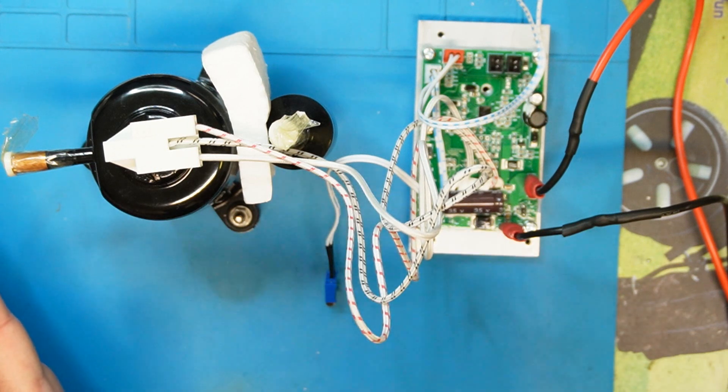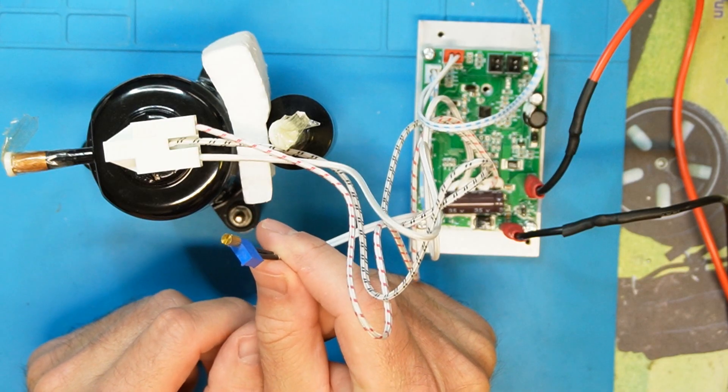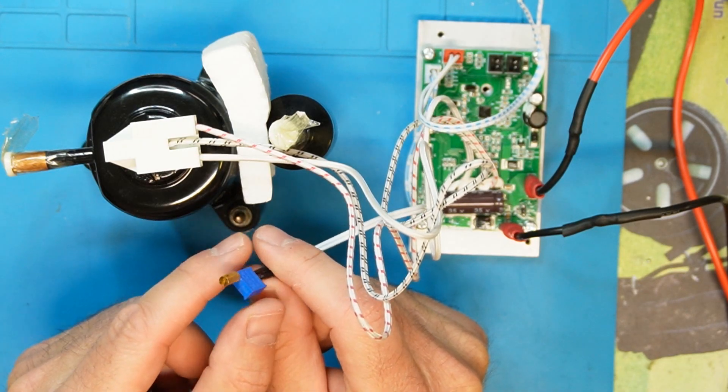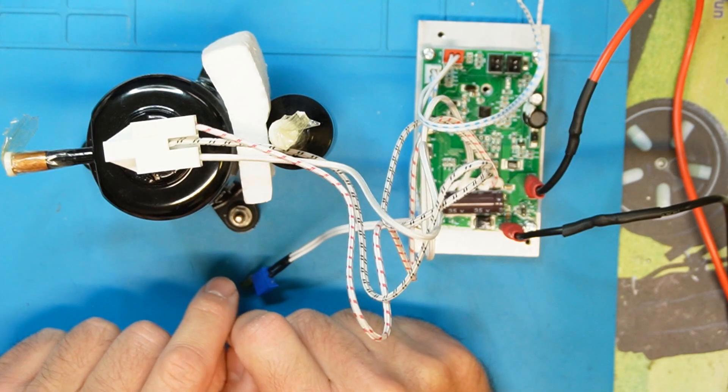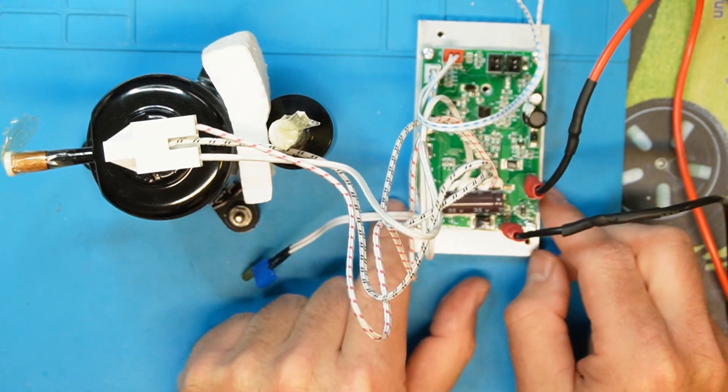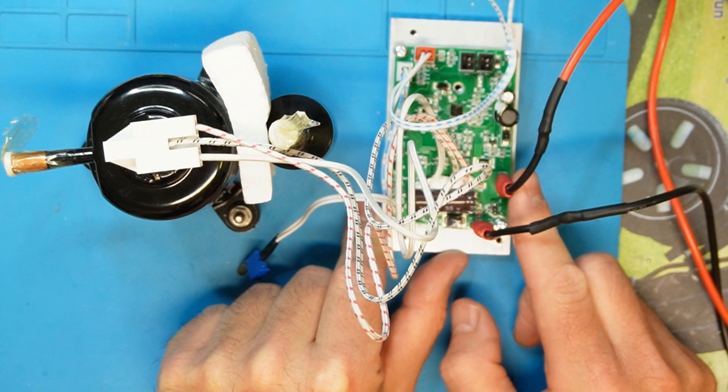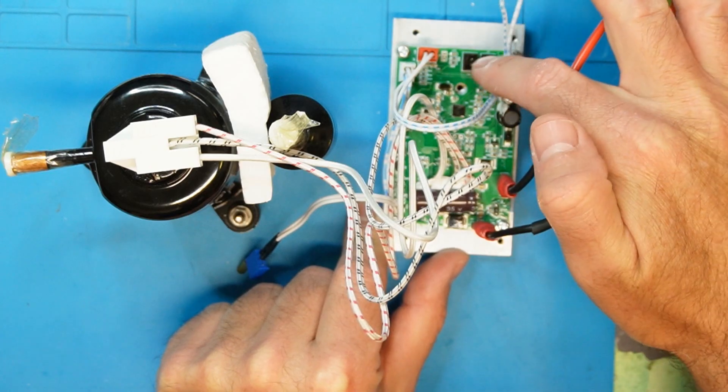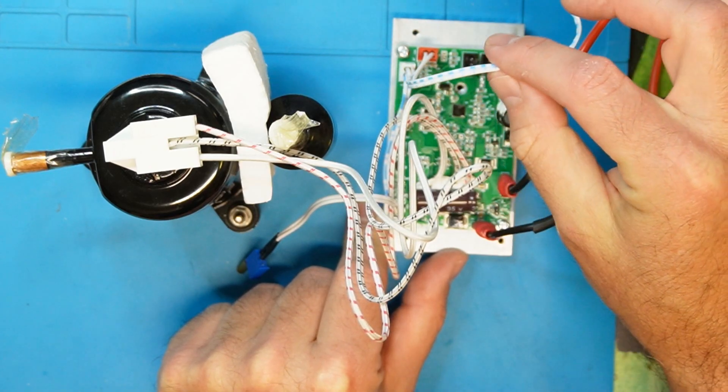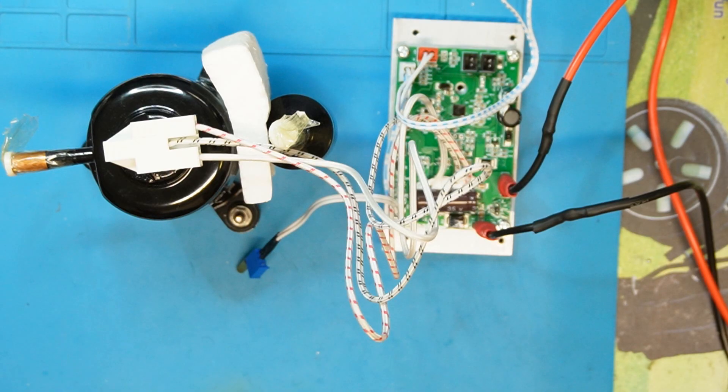This is probably the potentiometer to change the speed of the motor. Then I found there's a minus and plus, so this is the voltage input. We have two fans here and this is called the key.